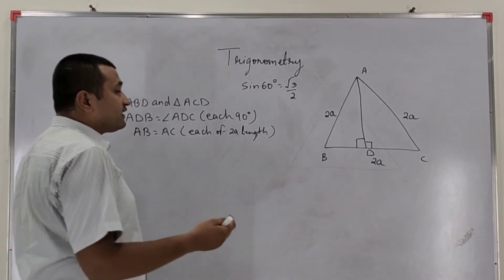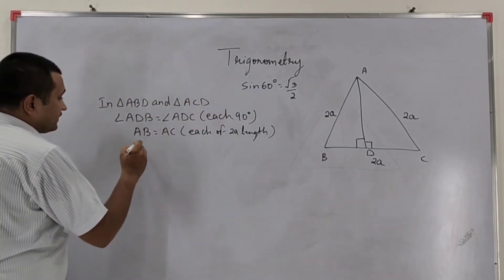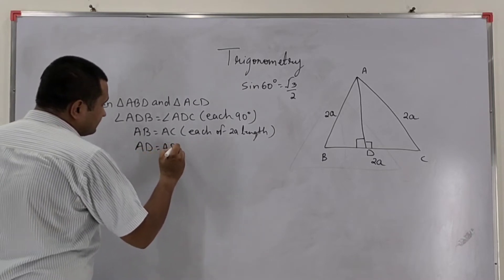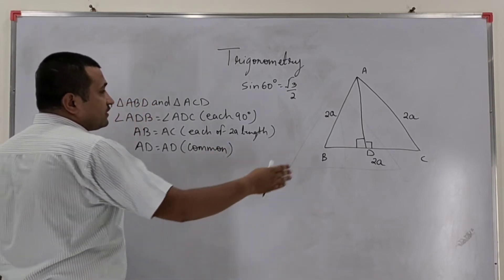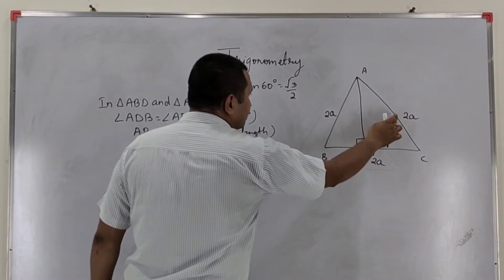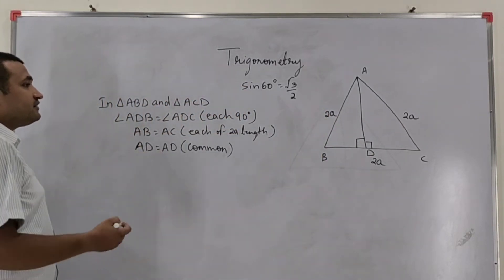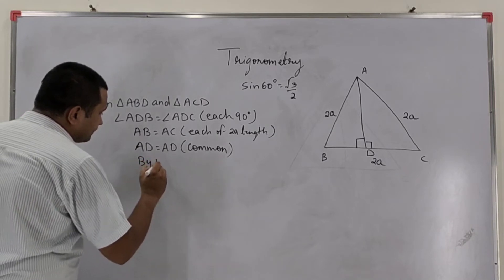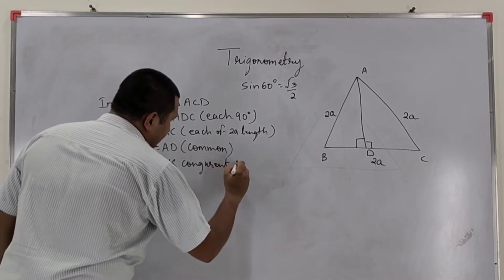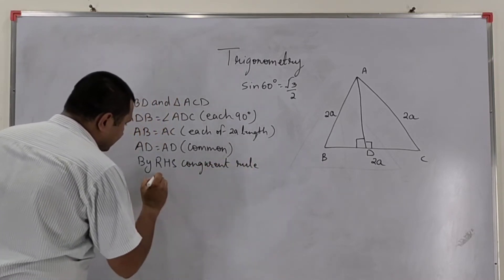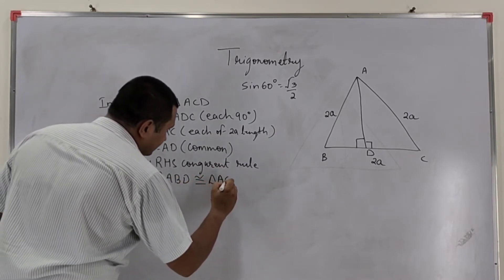And the third one is: in both triangles, one remaining side must be equal. So here in both triangles, AD is common. So the third condition is AD equals to AD, because it is common. So here in both triangles, we have found one angle is 90 degree, hypotenuse is of equal length, and one side is common. So by RHS congruence rule, we can say that triangle ABD is congruent to triangle ACD.